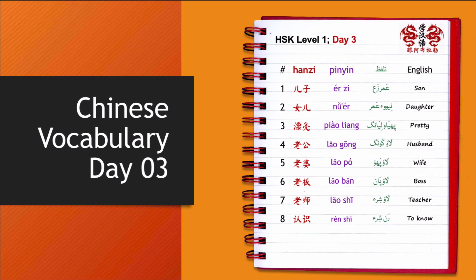Day 3 vocabulary: érzi (son), nǚér (daughter), piàoliang (beautiful), lǎogōng (husband), lǎopó (wife), lǎobǎn (boss), lǎoshī (teacher), rènshi (to know/recognize). Now let's go to today's Day 4 words.